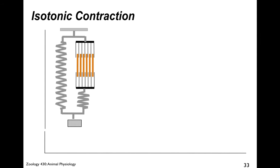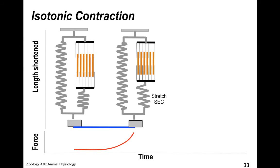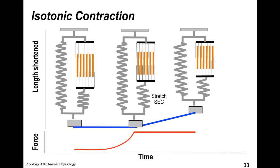In an isotonic contraction, before you get movement, the muscle is contracting but you're first getting a stretch of the series elastic components — stretching the tendons. Then you reach a point where you start to get shortening of the muscle and actual motion, quite substantially. Then you relax and it returns to the normal resting length.